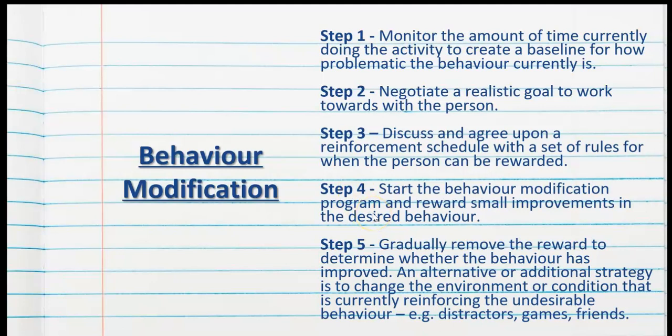Step five is to gradually remove the reward to determine whether the behavior has improved. An alternative or additional strategy is to change the environment or condition that is currently reinforcing the undesirable behavior, such as distractions, games, and friends.